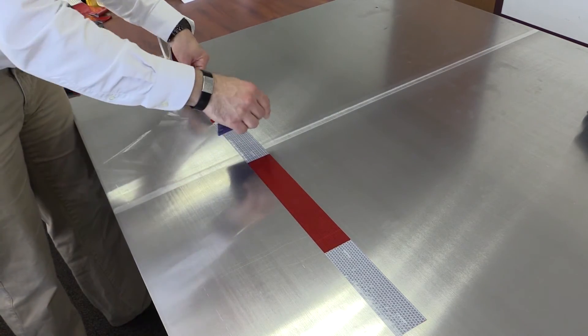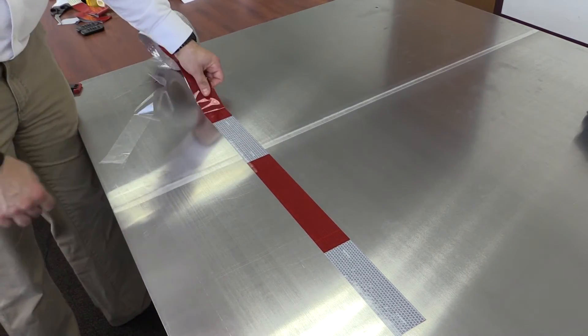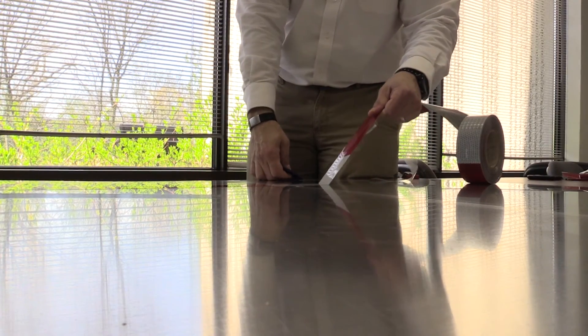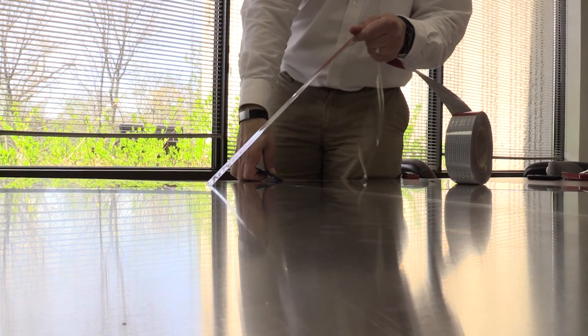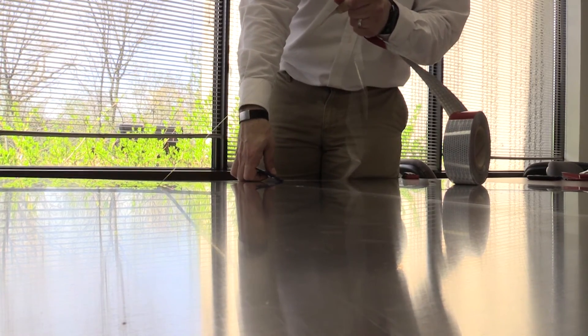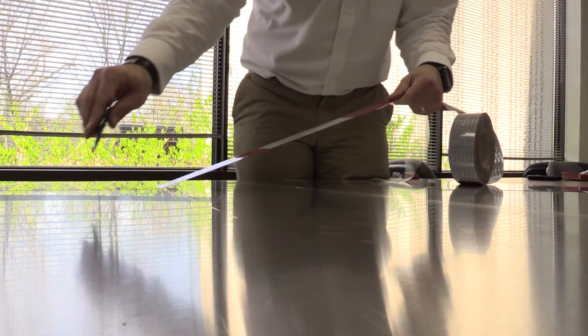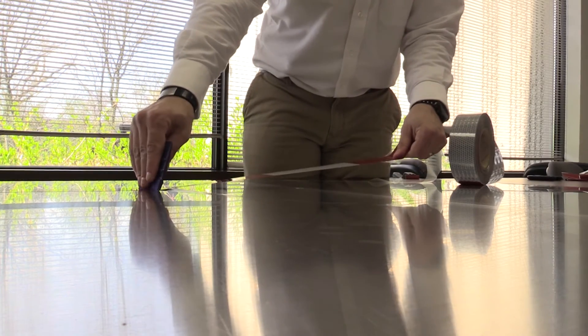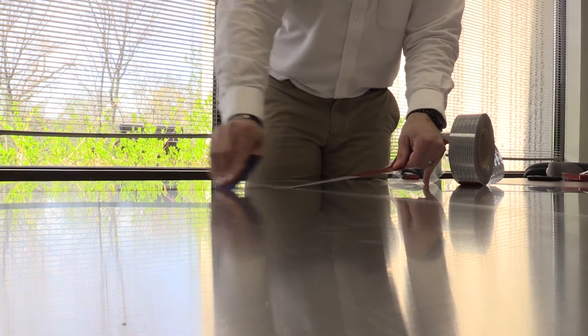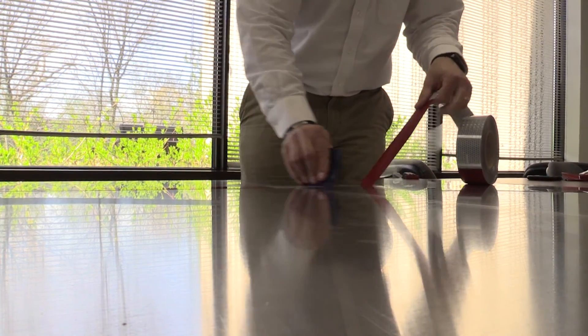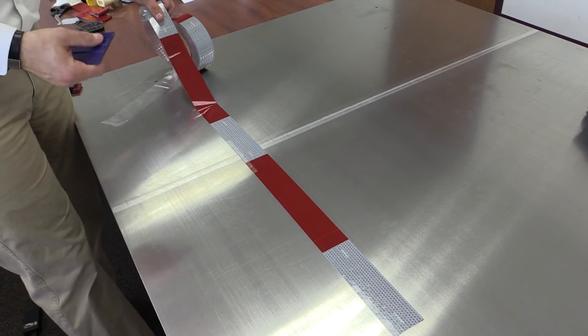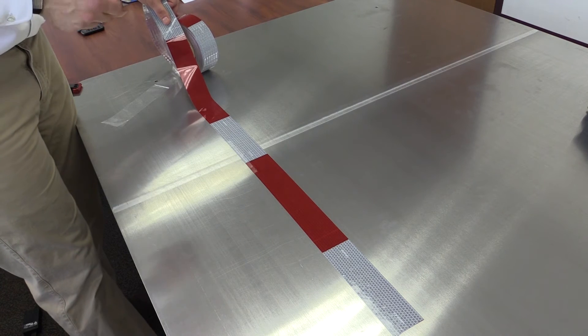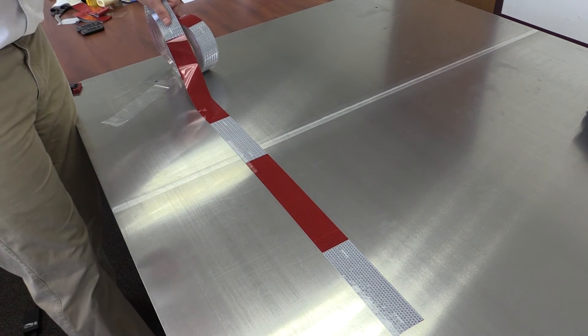If during the application you happen to get a skew or out of straight, you can simply reposition. And you want to do this within a couple minutes of application before the adhesive has a chance to start to build. But simply pull back at a low angle, less than 45 degrees, reposition your tape, and lay it back down. And this just helps to minimize the waste in your process so you don't have scrap due to misaligned tape. You can reposition and lay it back down without any losses.